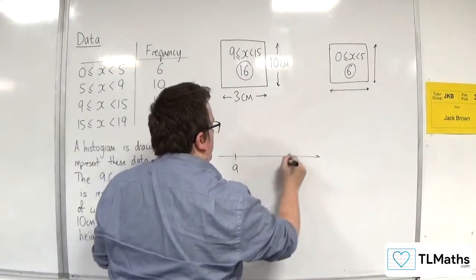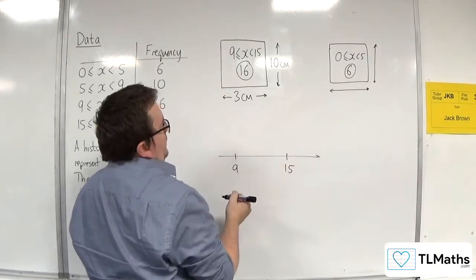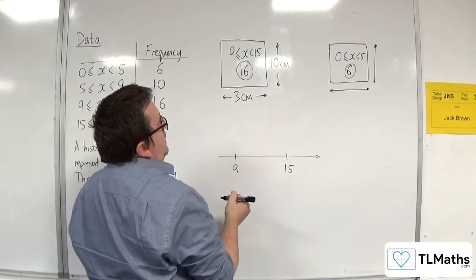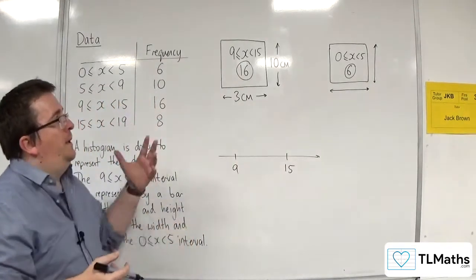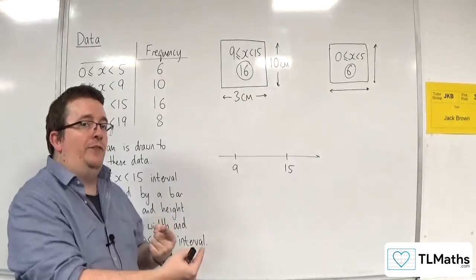If you're drawing it, so 9 to 15, I know that that's got to be 3 centimeters. So that means that every one along has got to be 3 divided by 6.